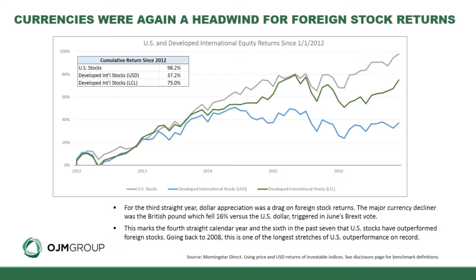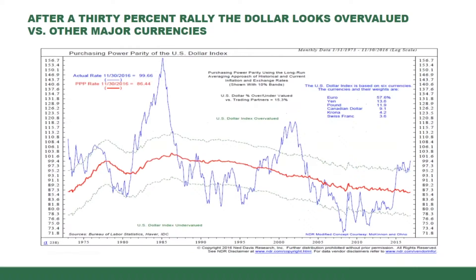You can see on this chart US stock returns since 2012 are coming up on 100% cumulatively. However, developed international stocks — tracked in the same index — show dramatically lower returns in US dollar terms compared to local currency terms. Returns were almost half in US dollar terms, and that difference was entirely due to the appreciation of the US dollar.